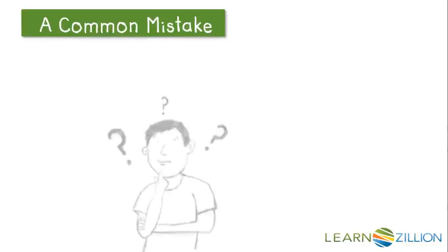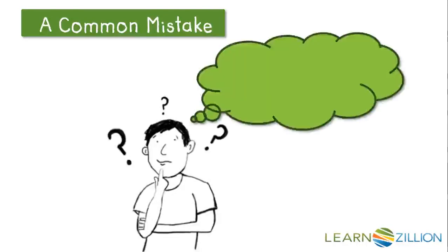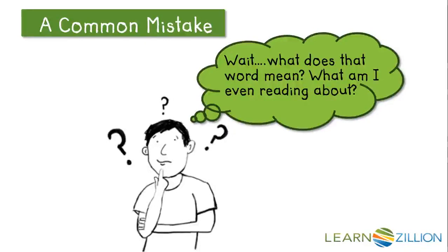A common mistake that readers often times make is that as they are reading, they simply skip over keywords that they do not understand. Then, at the end of the passage, it is difficult for the reader to understand the main point because they missed key information that the author was trying to convey through the vocabulary that the reader did not understand.